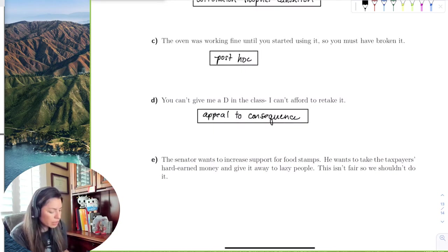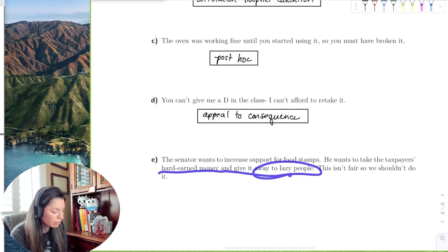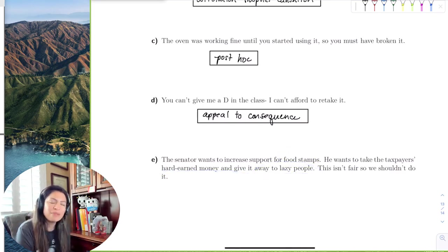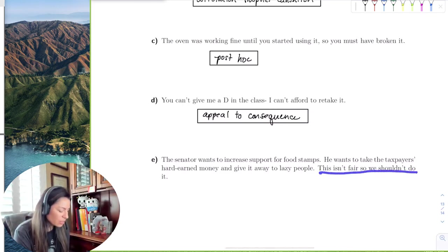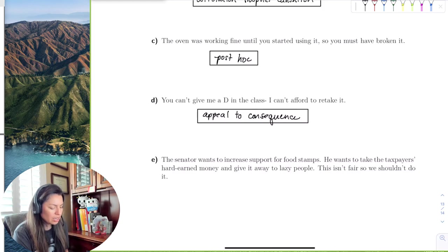All right. So the last one is the senator wants to increase support of food stamps. He wants to take the taxpayer's hard-earned money and give it away to lazy people. Boy, have we not heard of that kind of stuff lately, right? And this isn't fair, so we shouldn't do it. So you're like, okay, what? What isn't fair? The food stamps? You're like, well, people need to eat. I don't understand, right? So then let's read it again.